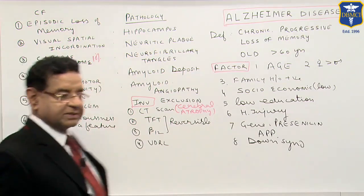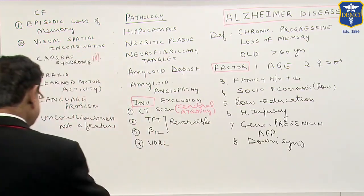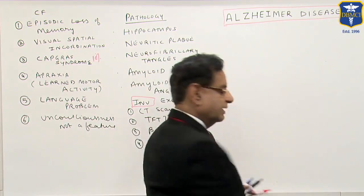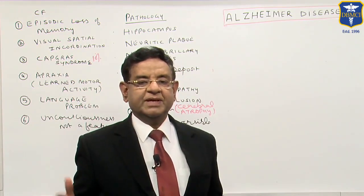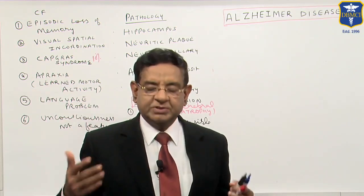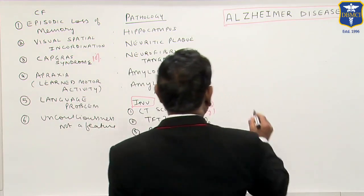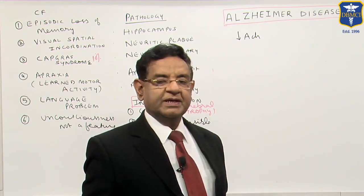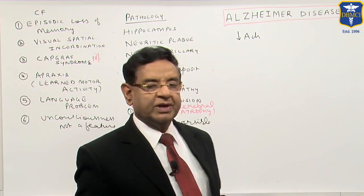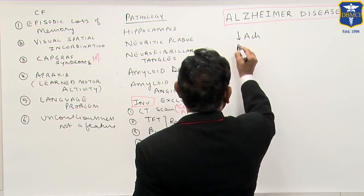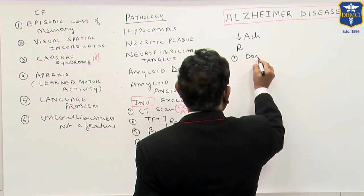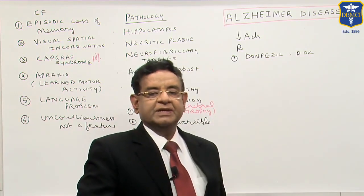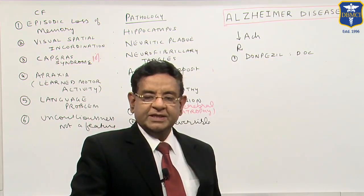The final diagnosis is only by biopsy. Now we have to treat this patient. Before starting treatment, let us understand the basic biochemistry: the basic biochemical abnormality is reduced acetylcholine in the brain. So in treatment, we will give drugs that increase the acetylcholine level. Donepezil is the drug of choice — it is an anticholinesterase drug that increases the level of acetylcholine in the brain.